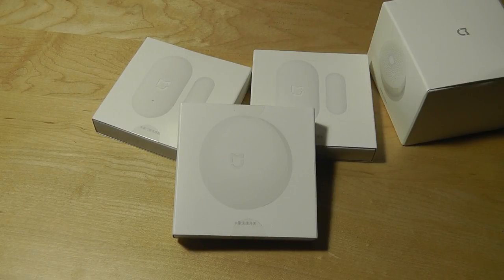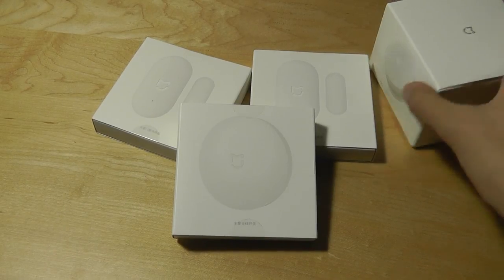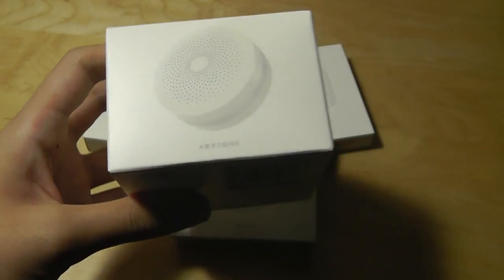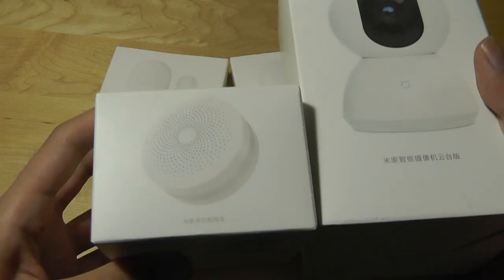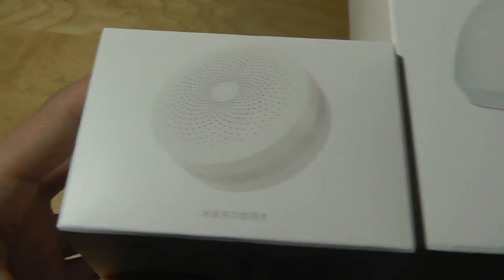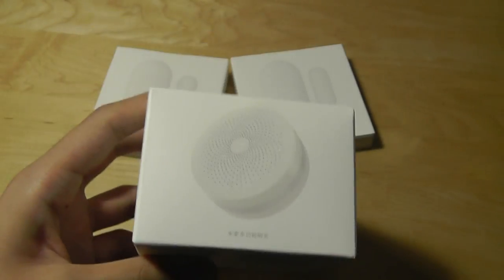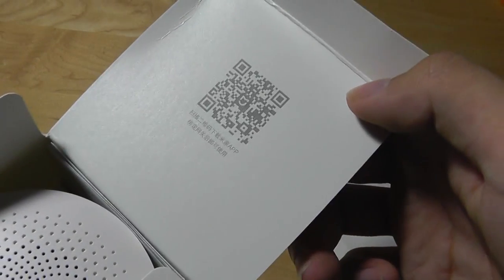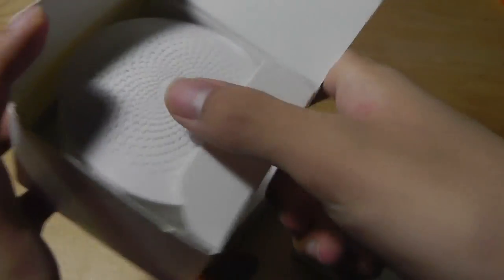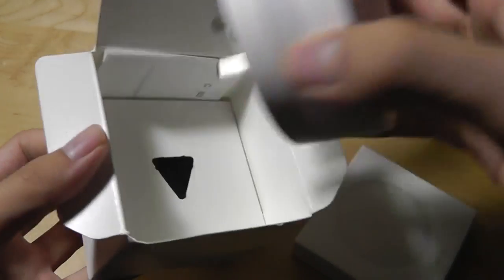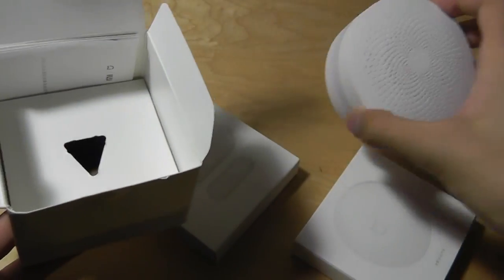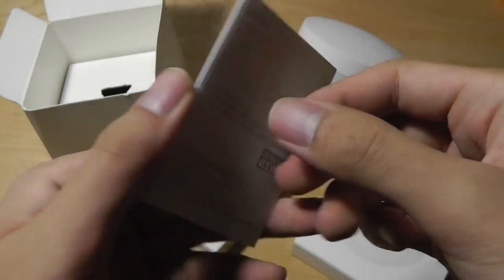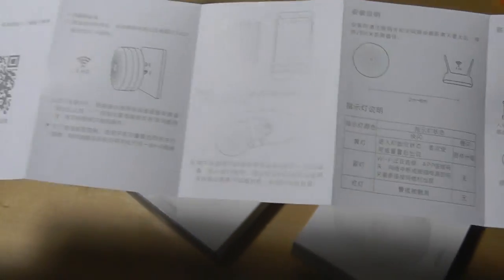Let's take a closer look at each of the individual boxes of the Aquara set. Starting with this little base, you can see that just like the Mijia home security camera, everything is printed in Chinese. This is still the Chinese version. Opening up the top, we have just a QR code that you can scan to install the Mijia home app if you don't have it already.